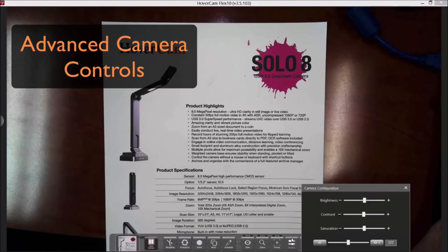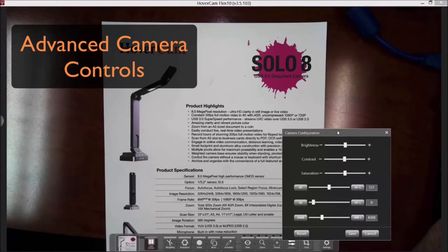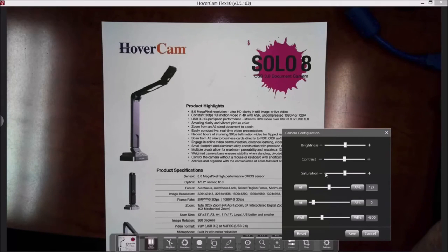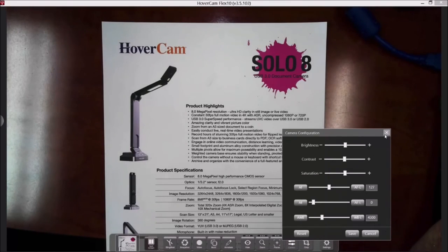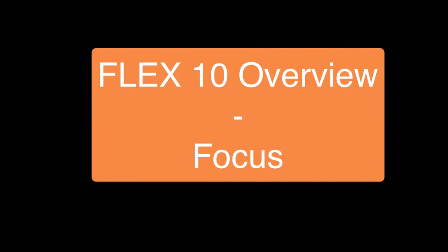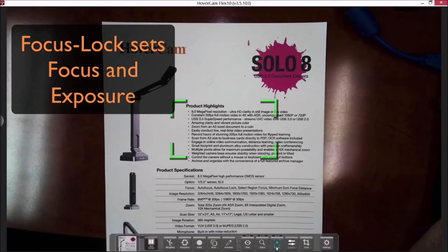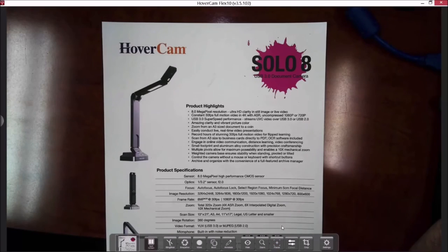For image controls, you have brightness, contrast, and saturation adjustments. You also have auto focus, auto exposure, and auto white balance. The Hovercam camera gives you the same types of controls as a single-lens reflex camera, but at half the price. For focus options, you have auto focus, auto focus lock, and select focus.